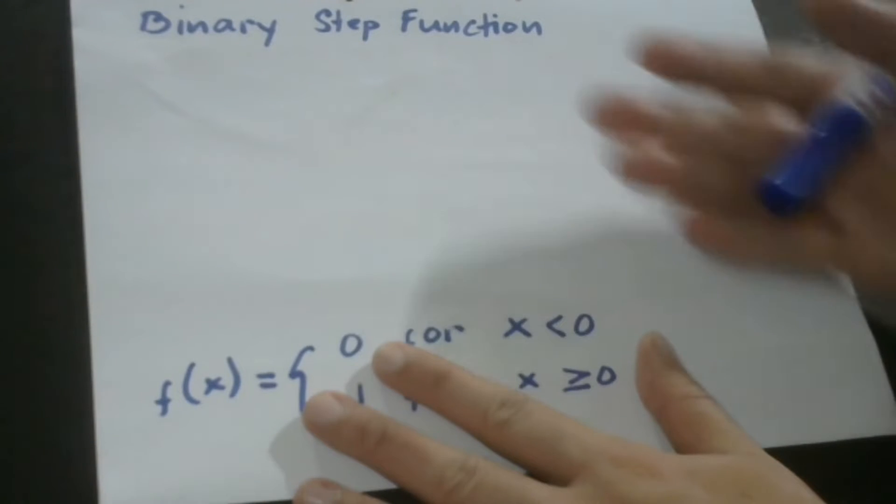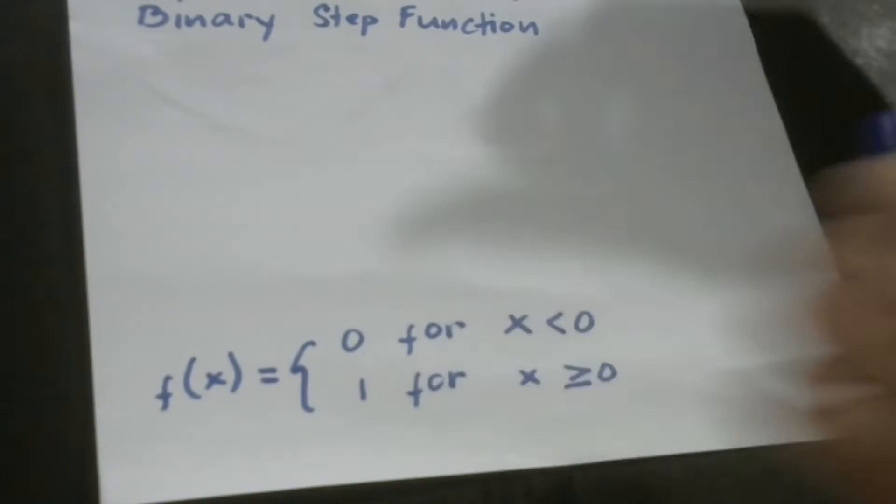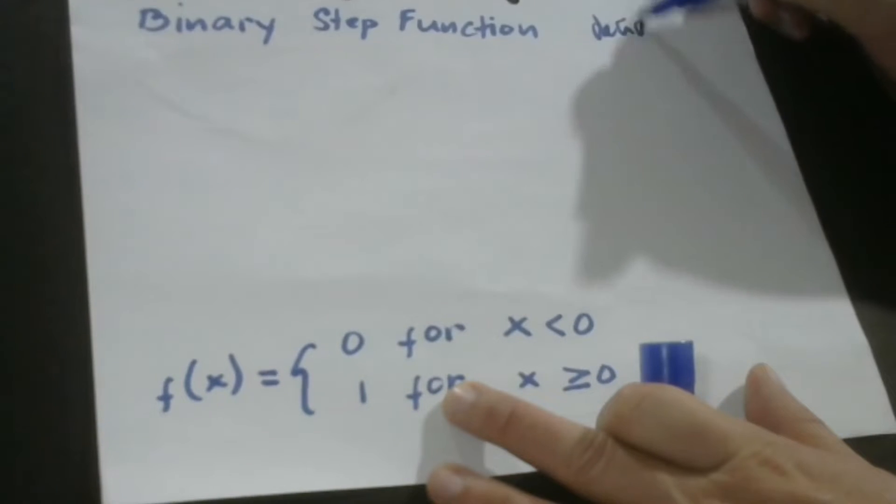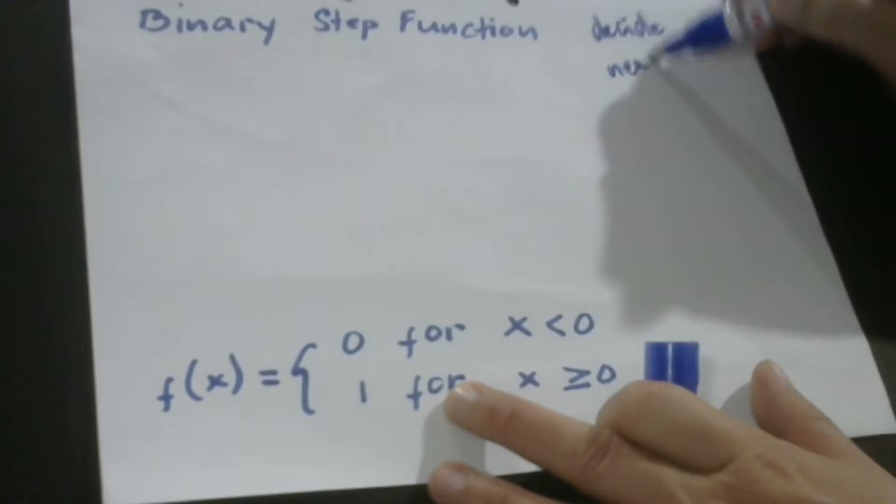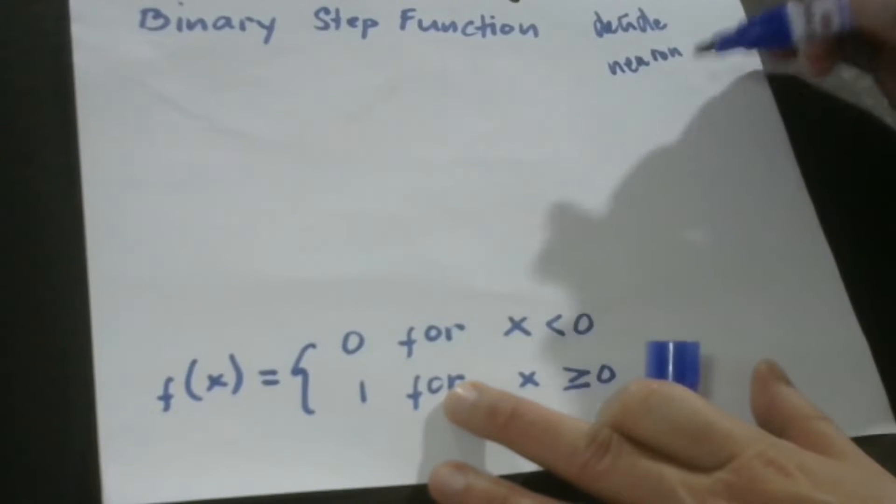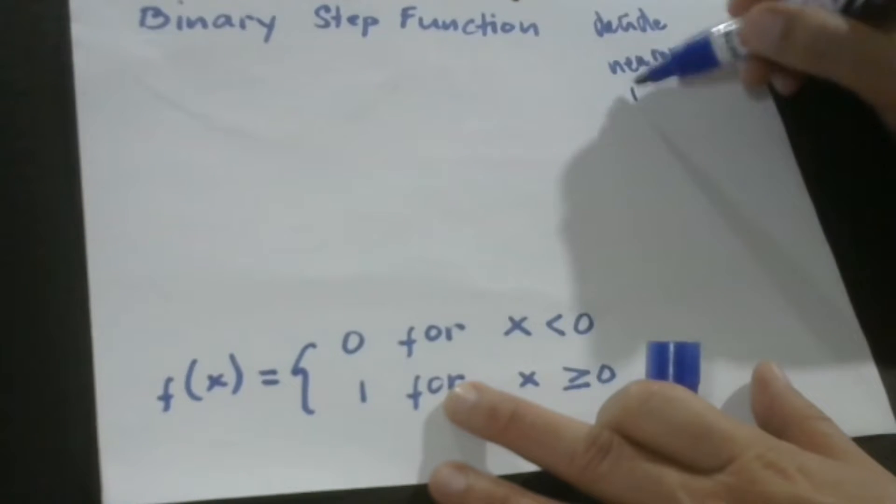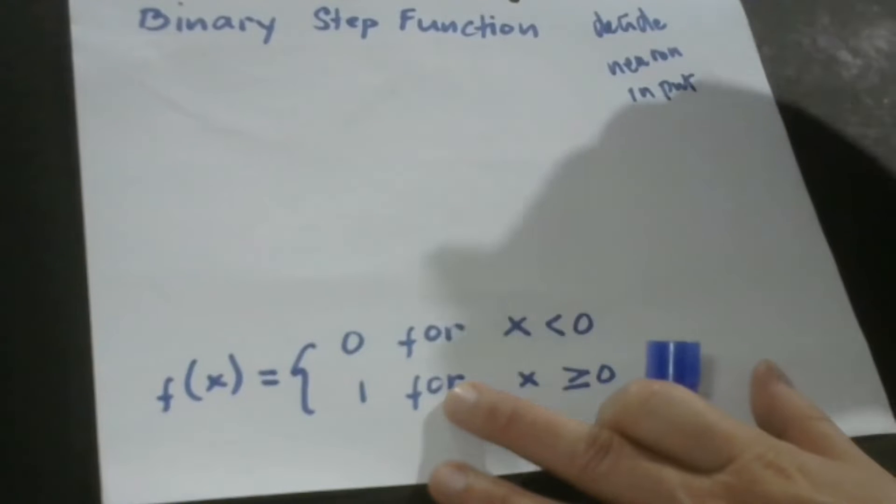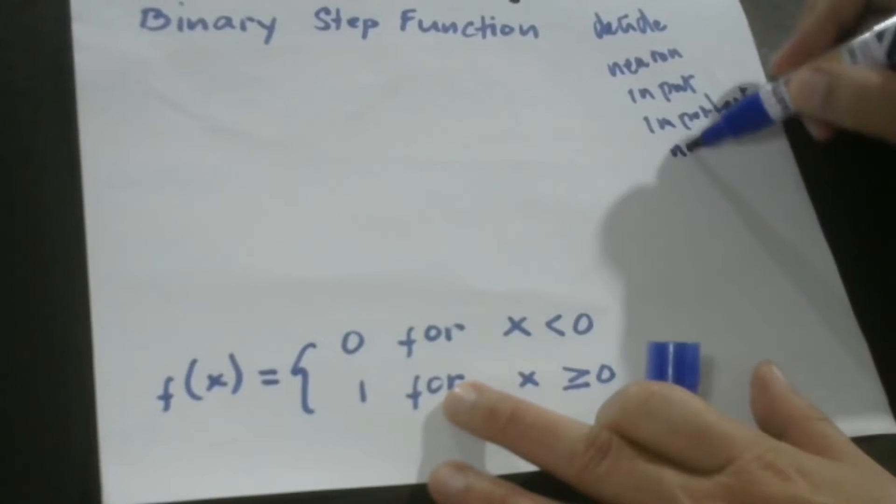So what is an Activation Function? An Activation Function actually decides whether a certain neuron should be activated or not. What does this mean? It means it will decide whether the neuron's input to the network is important or not important.